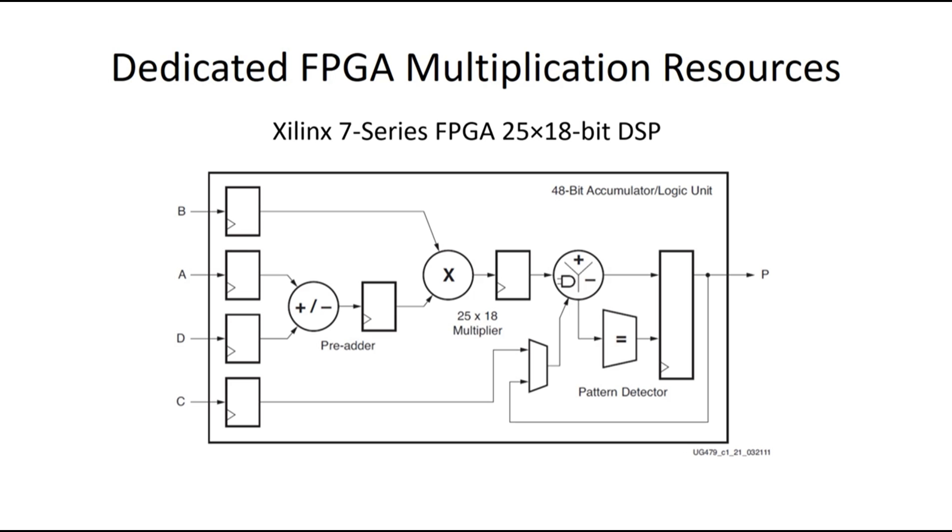they have a set of 25 by 18 bit, what are referred to as digital signal processing blocks or DSP blocks. And this figure here shows an abstract overview of what is available within a single DSP block. So there is the multiplier that has been around for a while in FPGAs. In this case, it performs a 25 by 18 bit multiplication.